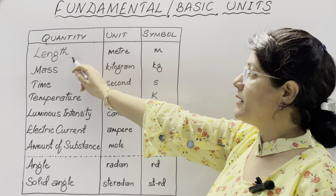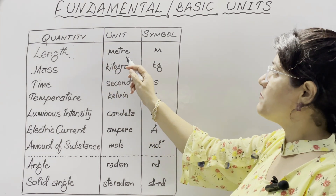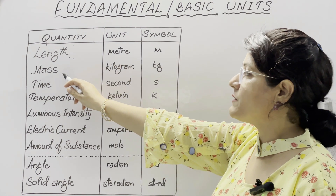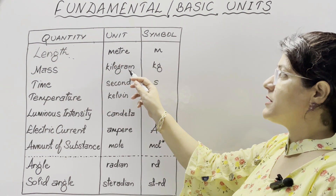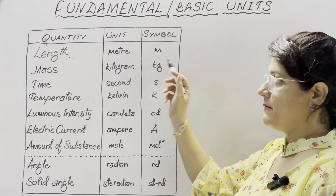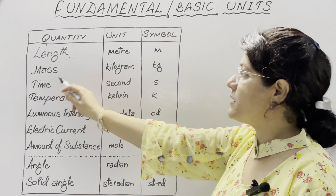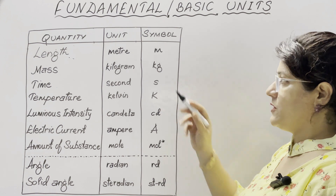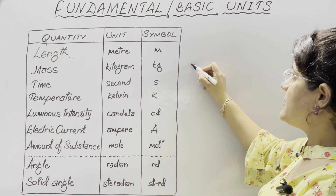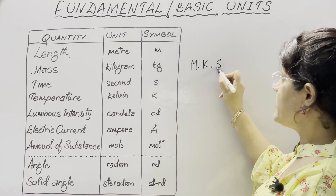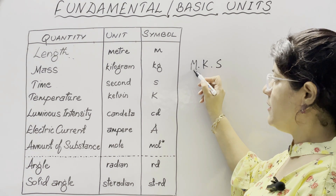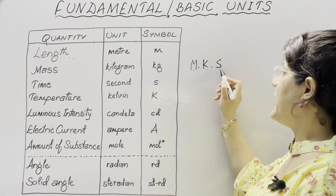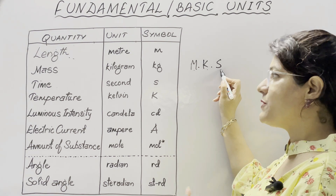The first physical quantity is length; its unit is meter and symbol is small m. Mass is the next physical quantity; its SI unit is kilogram, written as kg. Time is the next physical quantity; its SI unit is second, written as S. You may summarize them as M, K, and S — M for meter which is the unit of length, K for kg which is the unit of mass, and S for second which is the unit of time.